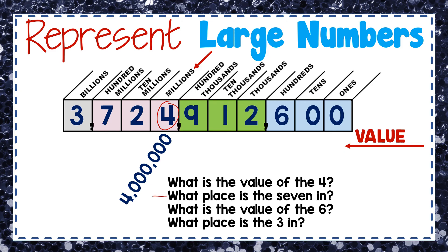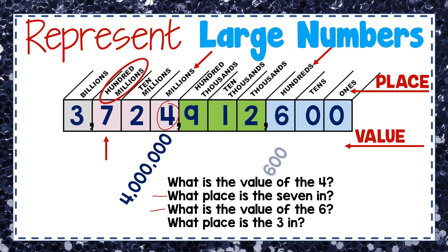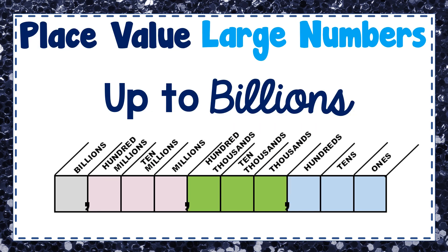What place is the seven in? Looking at the top of the place value chart, the seven is in the hundred millions place. What is the value of the six? The six is in the hundreds place and has a value of six hundred. What place is the three in? The three is in the billions place and it represents three billion.